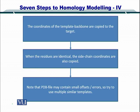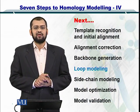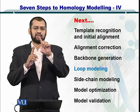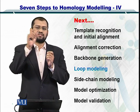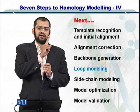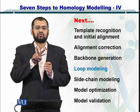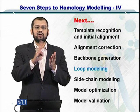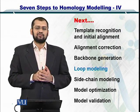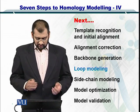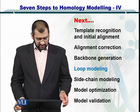Once you have done that, please remember that PDB may contain slight offsets and errors, so it is useful to use multiple similar templates at a time. The backbone is generated, and along with the backbone, you have also placed the side chains for those amino acids that were present in both the template and the target sequence at the same positions. You have the backbone plus the side chains for the common amino acids. Now, the next step is the loop model — let's take a look at loop modeling.